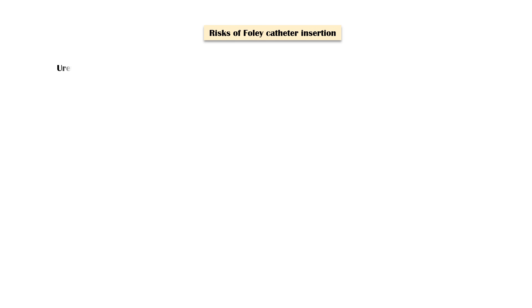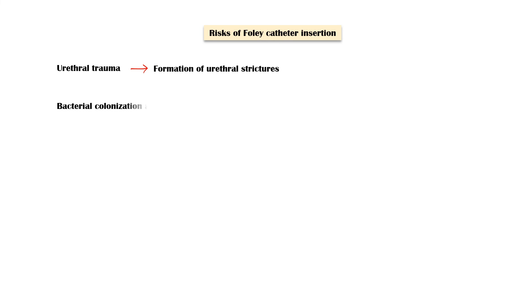A few risks are associated with Foley catheters. During insertion, the catheter can cause urethral trauma, especially when performed by untrained personnel. This can lead to long-term problems such as formation of urethral strictures. The catheter surface can also be colonized by bacteria, especially if it is placed for a long period of time.